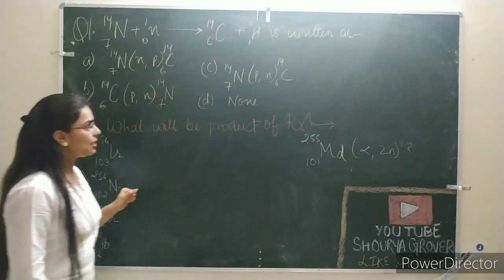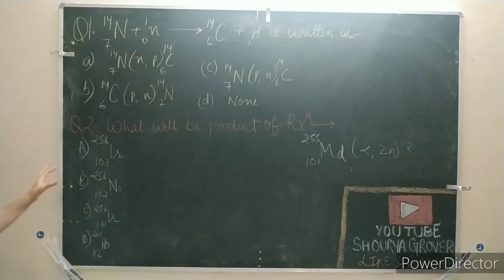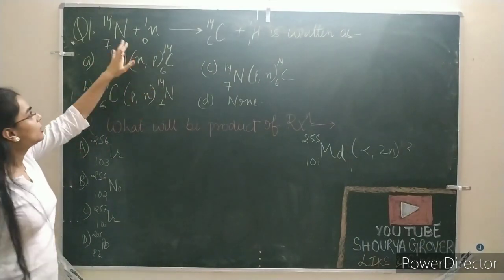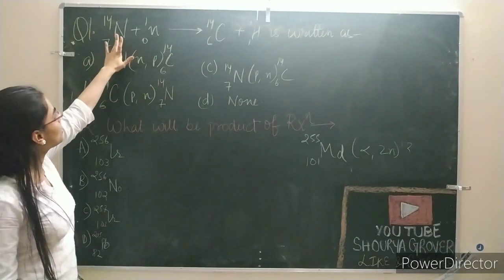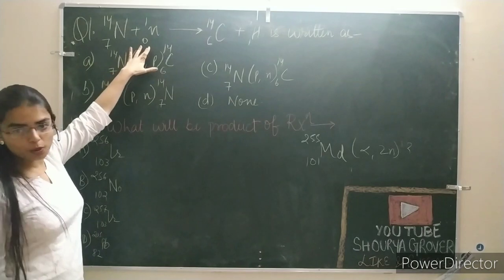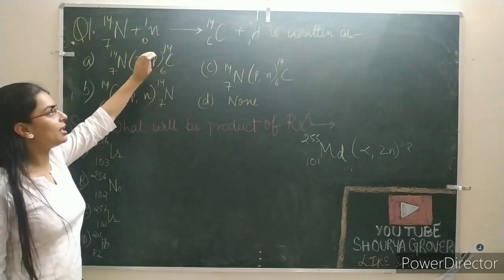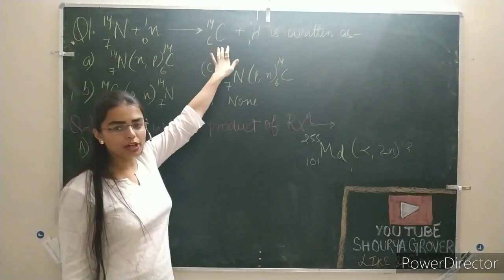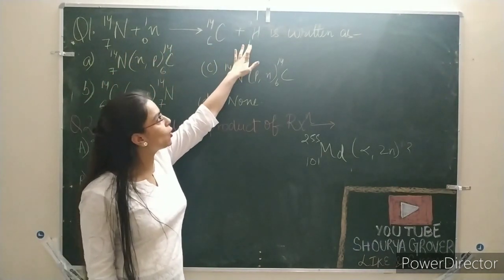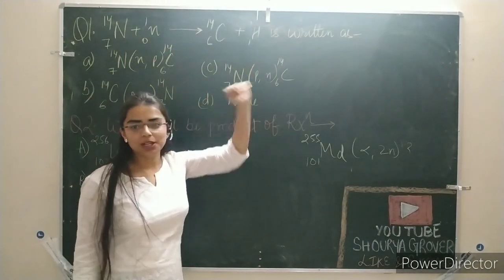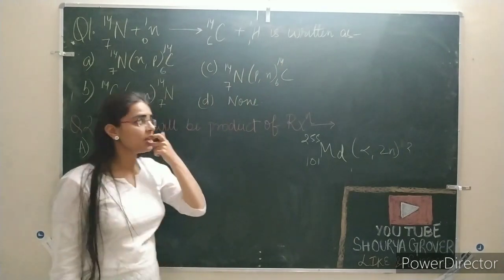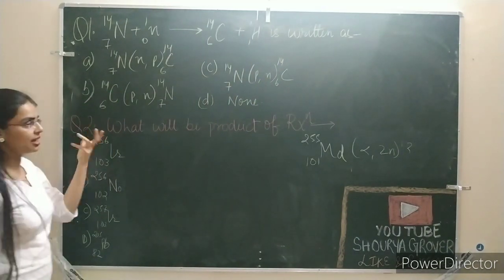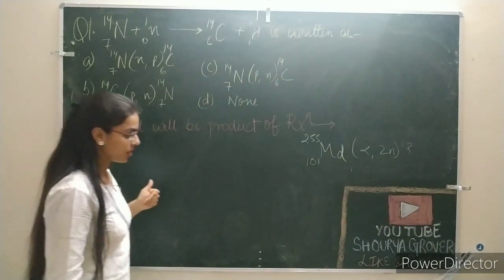First of all, the question is on the screen. You have a reaction: a neutron on nitrogen. This is a carbon production and a proton is emitted. Now, I have told you to represent it — how can we write it?